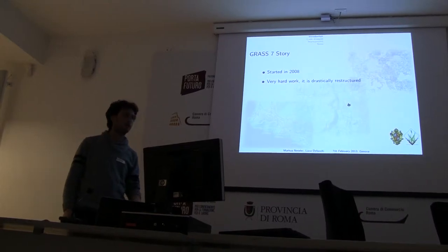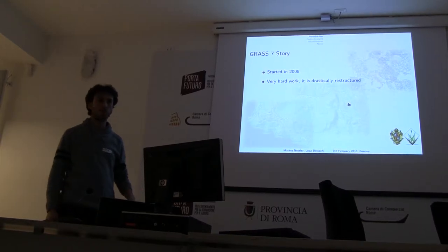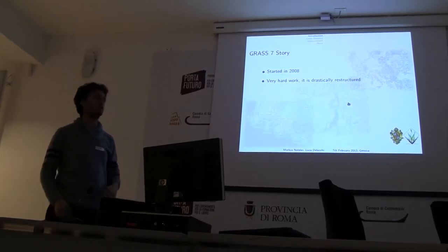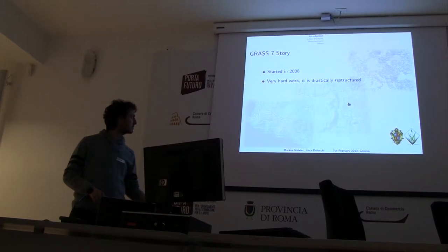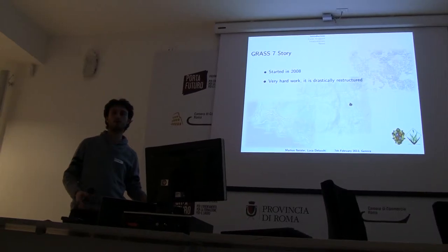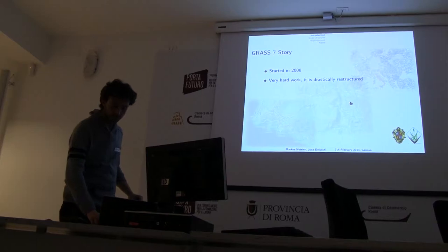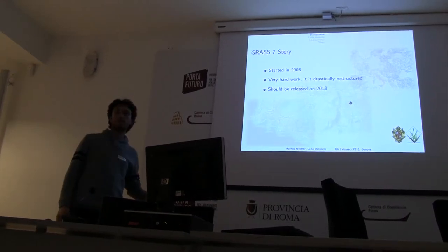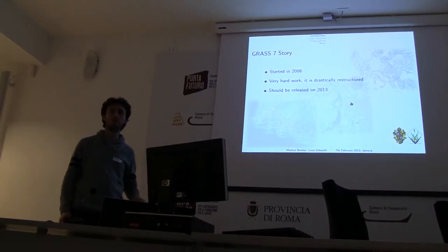This was because we changed a lot of stuff inside the core — there were a lot of changes in the libraries, a lot of new modules. The core developers are not so many — maybe 7 or 8 people doing the work. We hope to release the first stable version of GRASS 7 this year, but we don't have a fixed plan, so maybe it could also be next year.